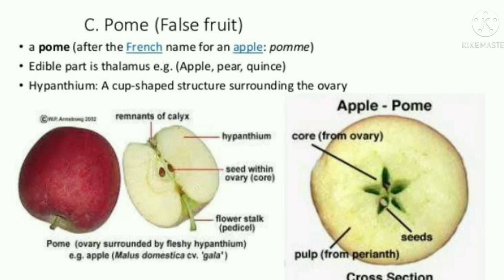Pome: after the French name for an apple. The edible parts are in the thalamus. Hypanthium is a cup-shaped structure surrounding the ovary. The following image shows the cross-section of an apple.